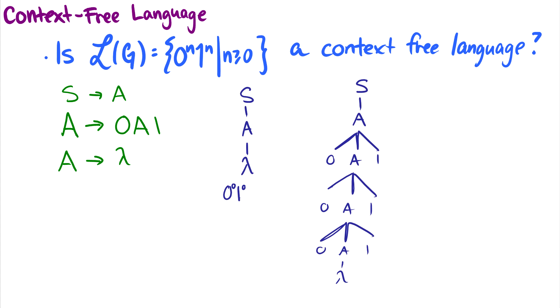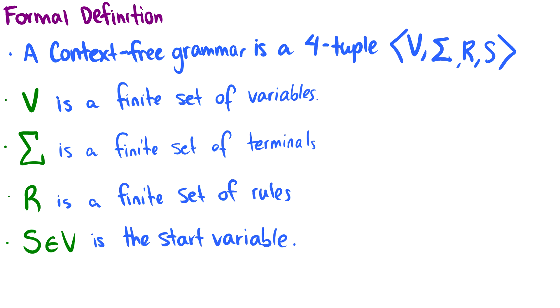So for instance, we can have the center embedding or cross-serial dependencies with this, where we have n NPs followed by n VPs.